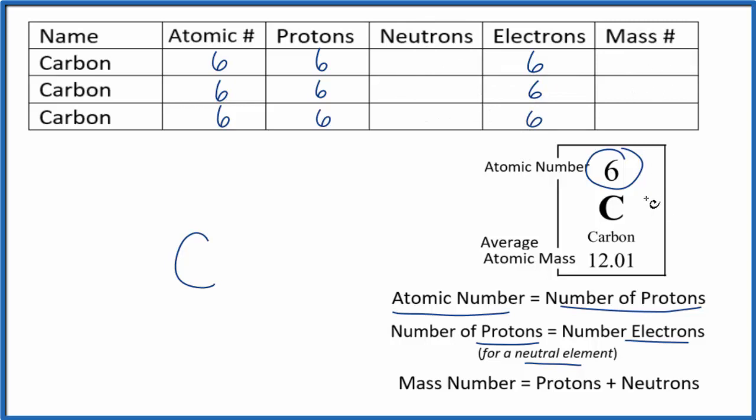If you had a sample of carbon, you had a block of carbon, most of it would have a mass number of 12. And we can see that from the periodic table. This is an average of all the isotopes based on their abundance. So most of them have a mass number of 12.